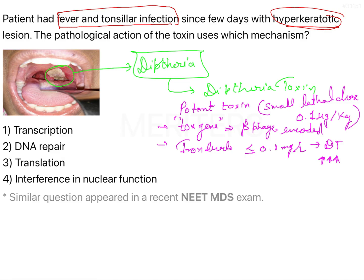The toxin has two subunits: the A subunit and the B subunit. These subunits have a molecular weight of 62,000 Da.